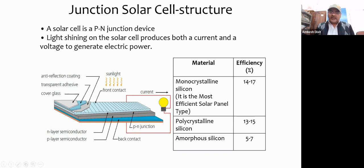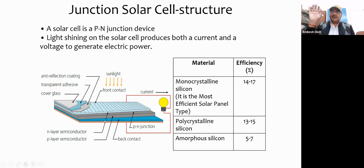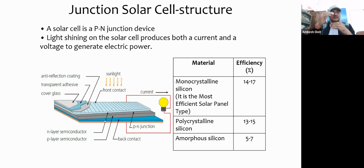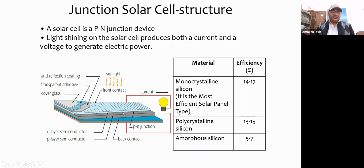Above the anti-reflection coating there is a transparent adhesive and a glass cover to protect the inner layers from degradation. This is a cross-section of a typical crystalline silicon solar cell as seen on rooftops. An amorphous silicon solar cell has a p-i-n configuration: p-type amorphous silicon, intrinsic amorphous silicon, and n-type silicon — three stacked layers — because of the different charge transport regions, unlike the simple p-n junction in crystalline silicon.